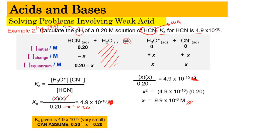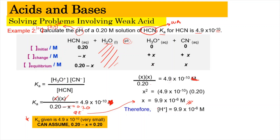This is where the assumption saves time — using a quadratic equation would give a similar answer but is longer. Using pH = −log[H⁺], we substitute x = 9.9 × 10^(-6) M and get the pH value to be 5.0.